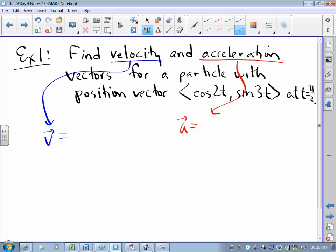So the velocity vector is the vector whose components are the derivatives of the position components. So the derivative of cosine 2t is negative 2 sine 2t and the derivative of sine 3t is 3 cosine 3t.